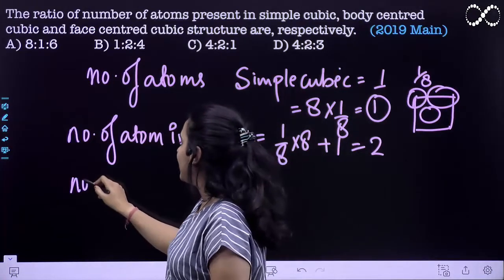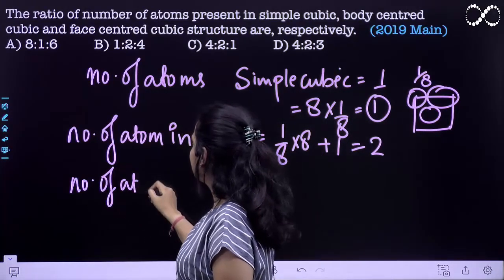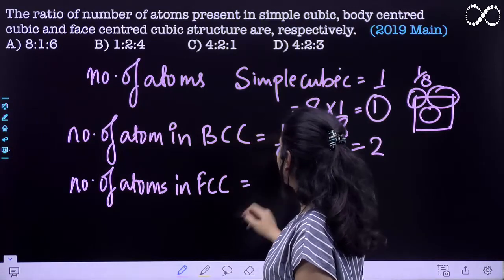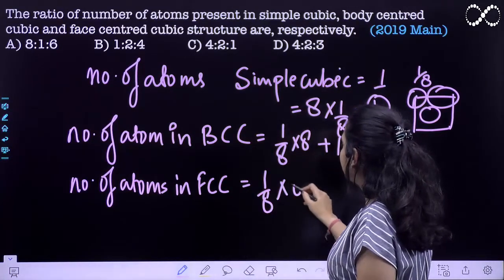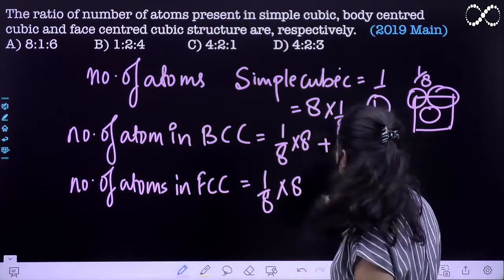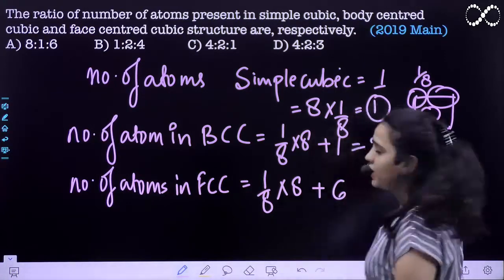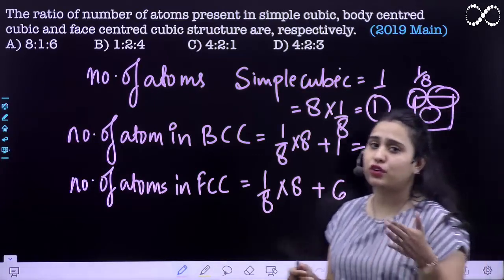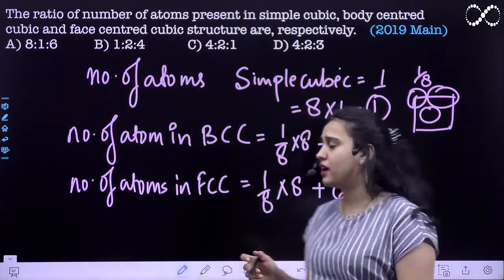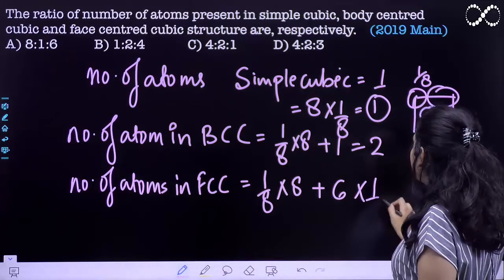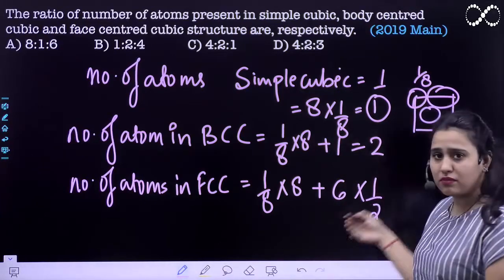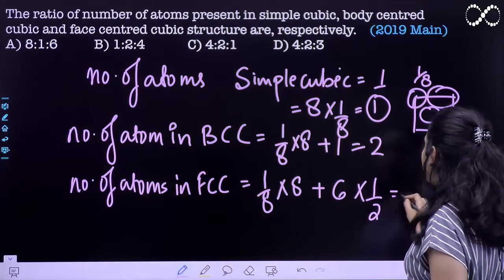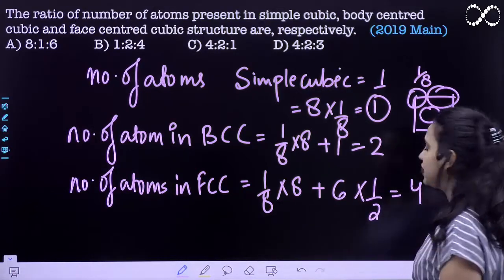Number of atoms in FCC is, the edge atoms plus 6 face atoms which are on 6 faces and they half contribute in your unit cell. So it is 6 atoms with 1 by 2 part is in a particular unit cell, therefore the number of atoms is 4.